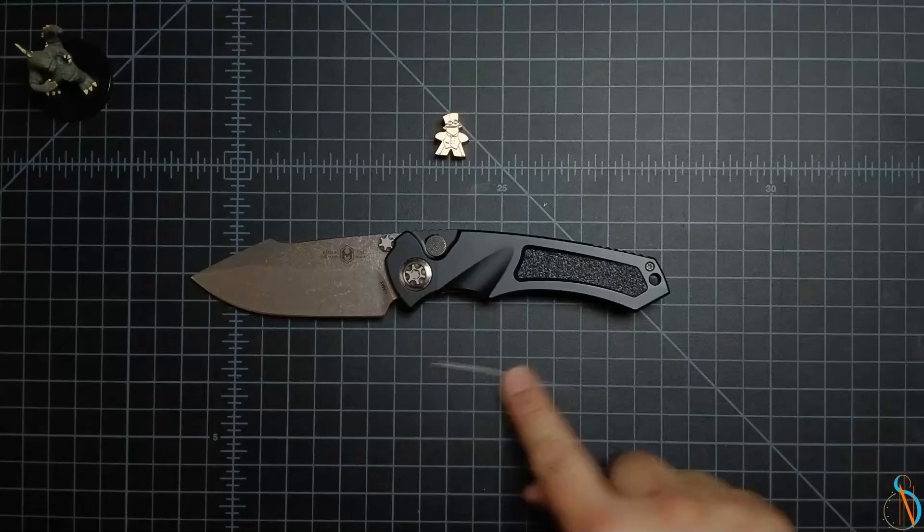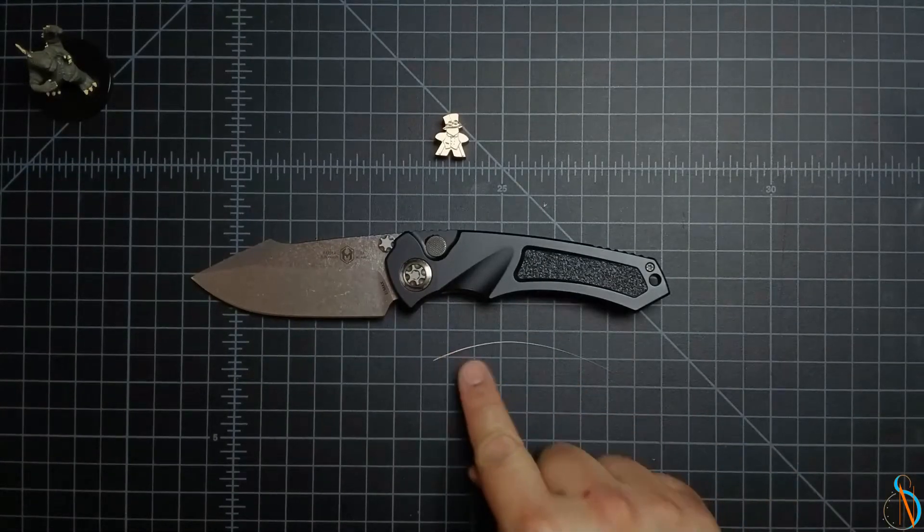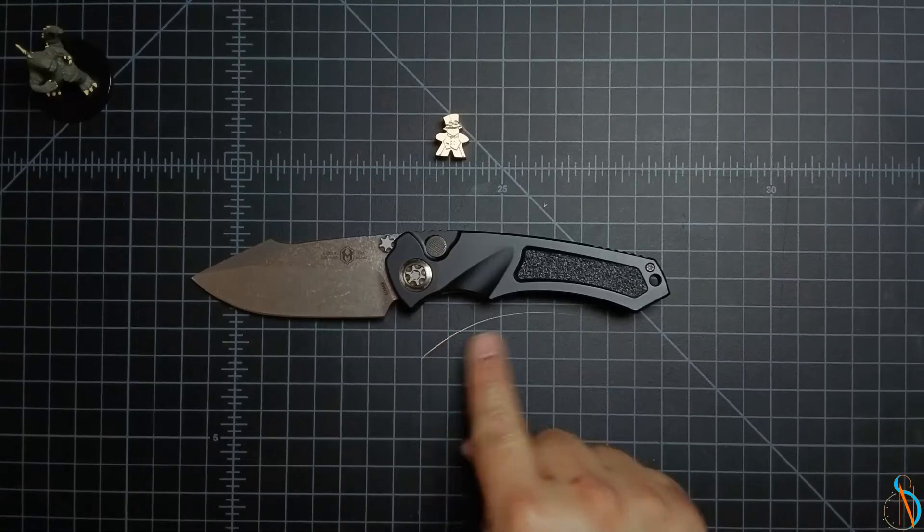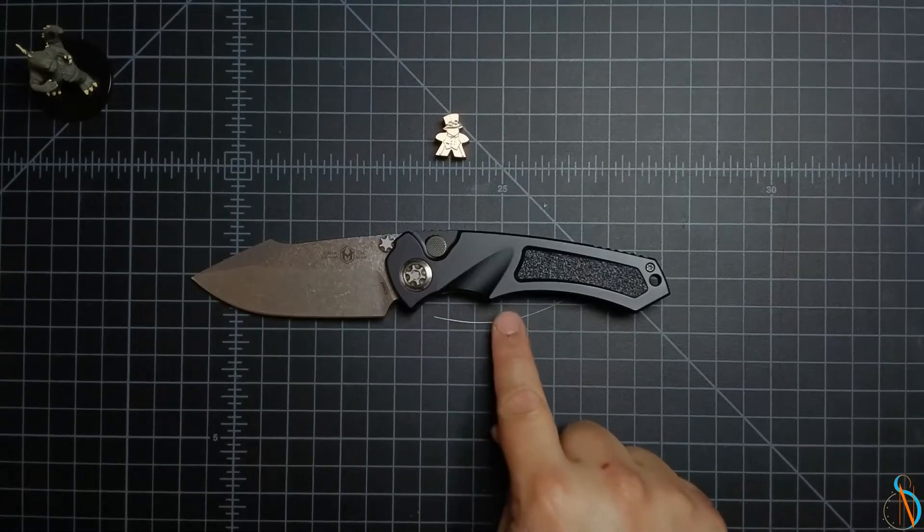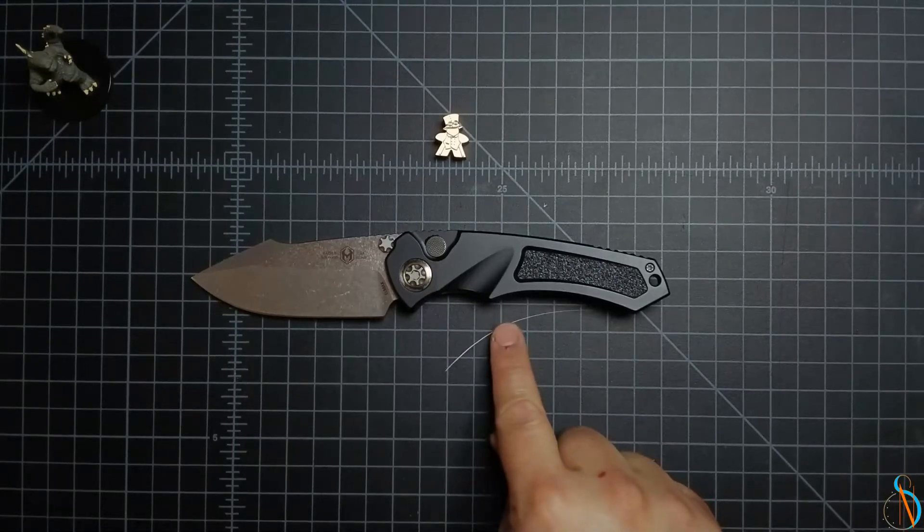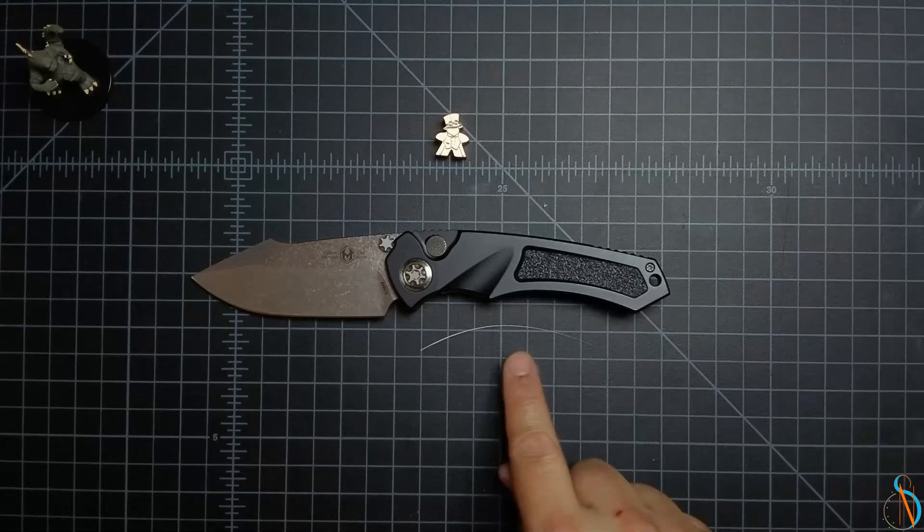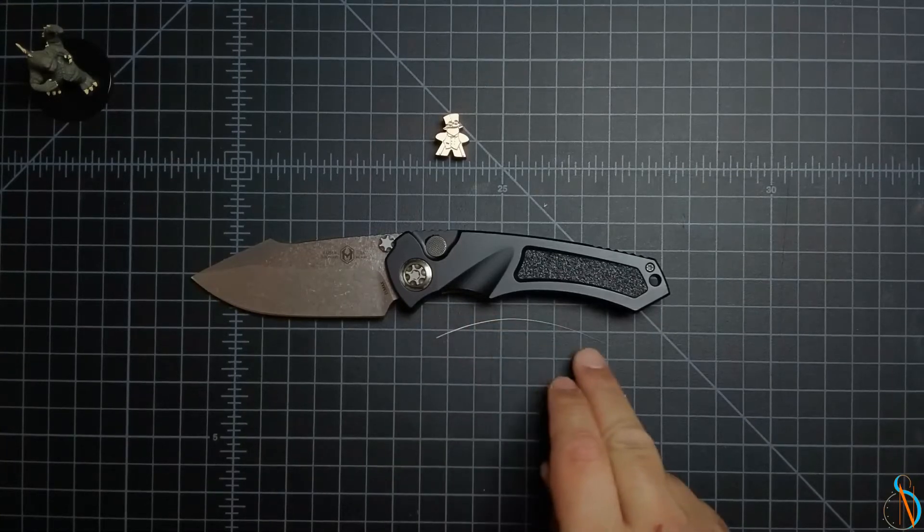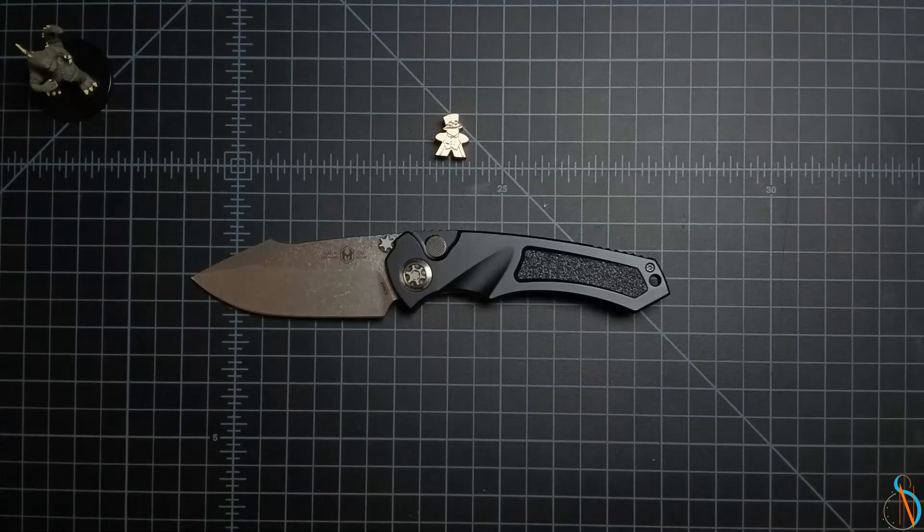Here you see the blade mimics the natural curve of a kitty whisker. Which is a beautiful thing. It really is. And well, I fiddle with this whisker against the handle so that you can see just how long that handle is. It's perfect for most paws. Some paws may find it a little too large.